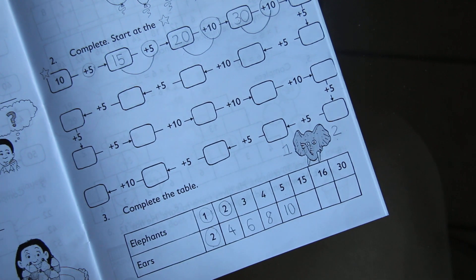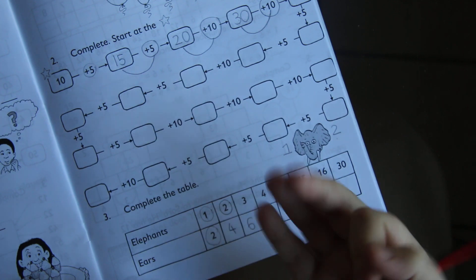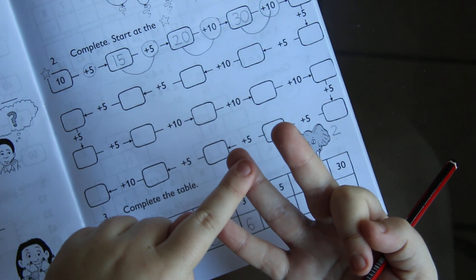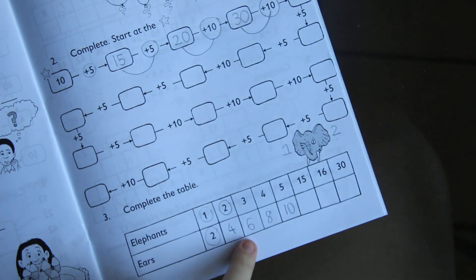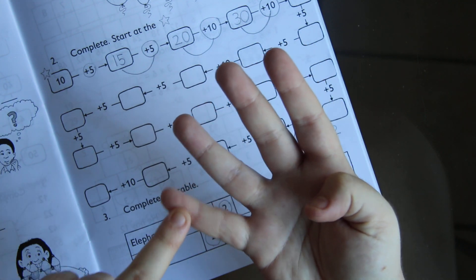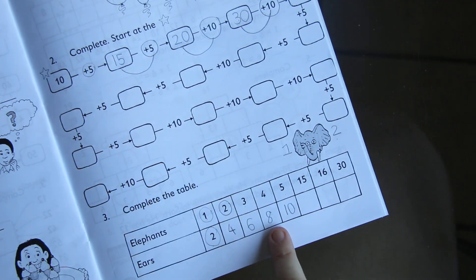Or you can count in twos. You can say, take three fingers and say, two, four, six. And your answer is six. Or four, put out four fingers and count in twos. Two, four, six, eight. Eight.